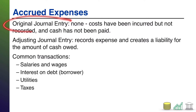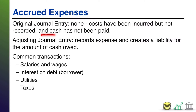Just going through this — there is no original journal entry. There's been a cost to the company, but it hasn't been recorded, and because it hasn't been recorded, you haven't paid it either. Typically, when you incur a cost, if you pay it on the spot, you know you've paid it and you record it. If you haven't even recorded it, that means you probably haven't been billed for it and you probably haven't paid it either. Cost has been incurred, but cash has not actually been paid, nor has it been recorded.